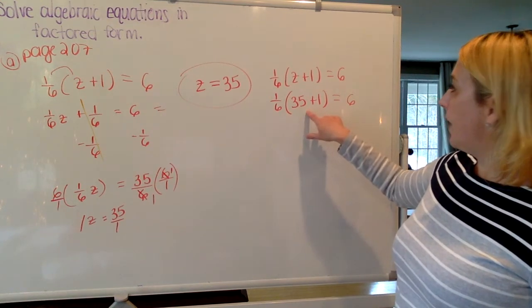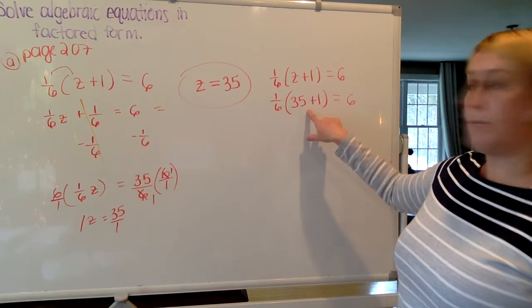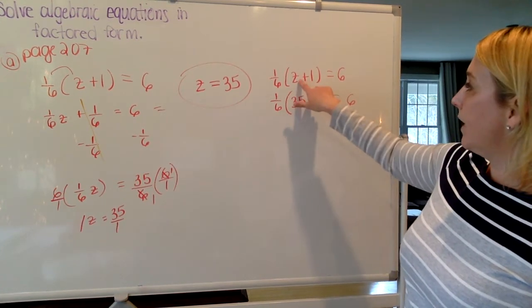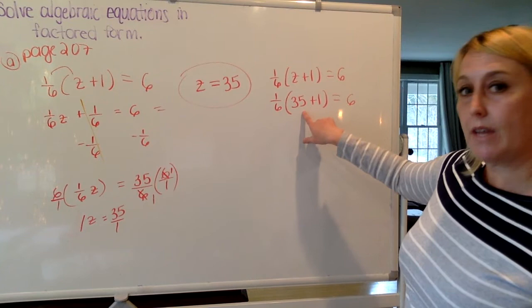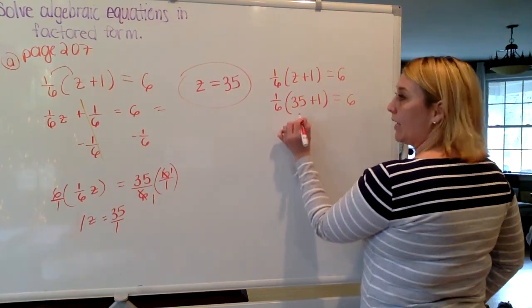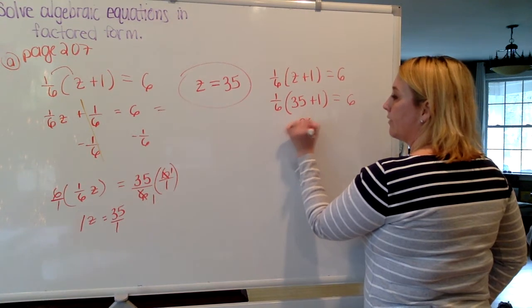So 35 plus 1, because this is inside the parentheses. Remember, our good old friend PEMDAS, I need to plug that z equals 35. It's inside the parentheses. I need to do the parentheses first. So 35 plus 1 is 36.